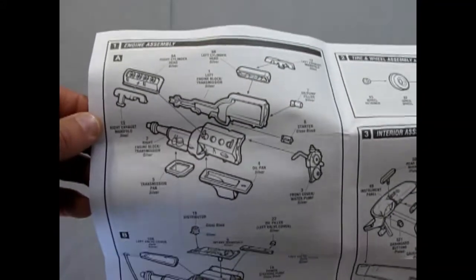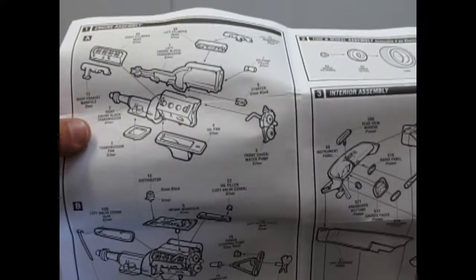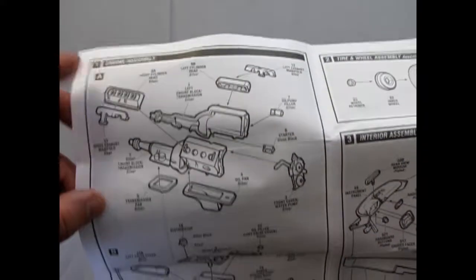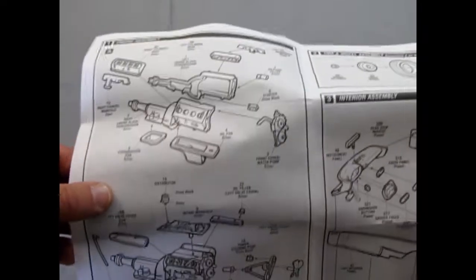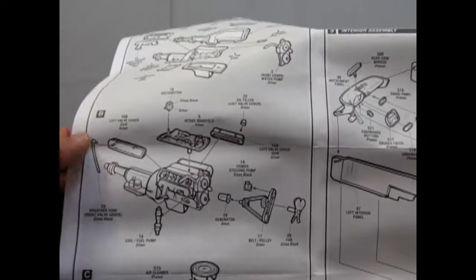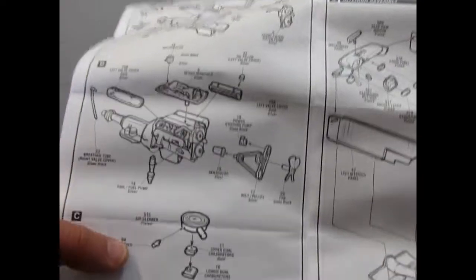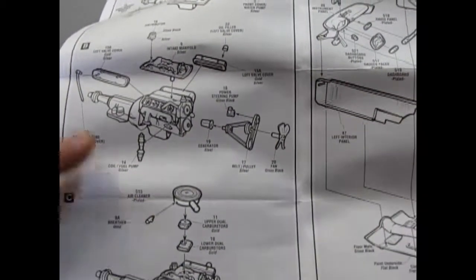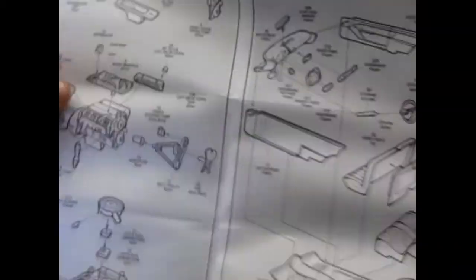So here we have this amazing Chrysler engine, the Plymouth engine, with the rockers exposed in the cylinder head, as well as a separate breather tube, and the carburetor, nice air cleaner.